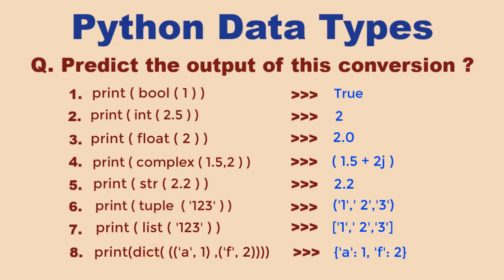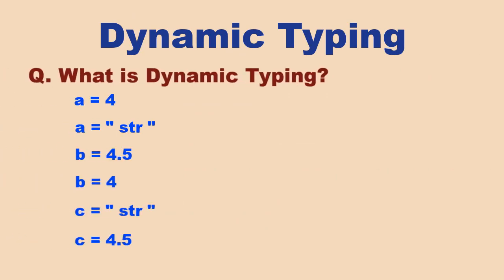One other question that could be asked is: what is dynamic typing in Python? You would have noticed that in Python, variables do not have any type. You can change the data type of a variable at runtime by just assigning the variable a different type.